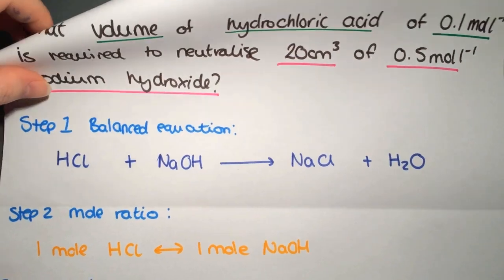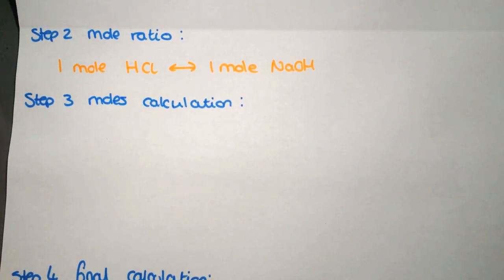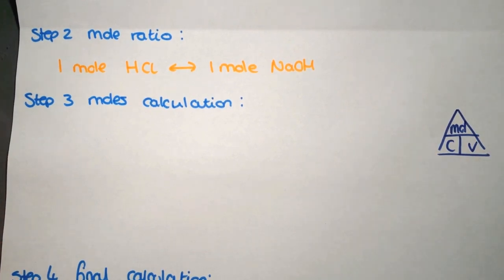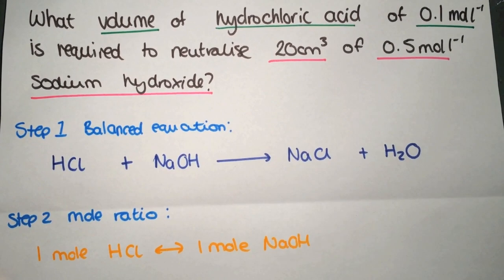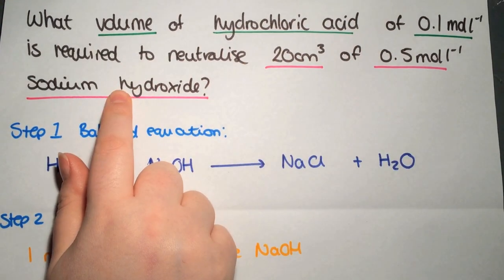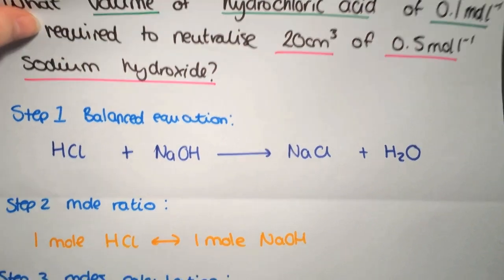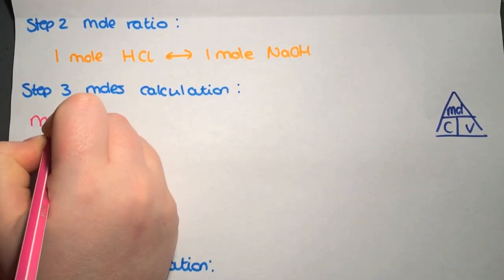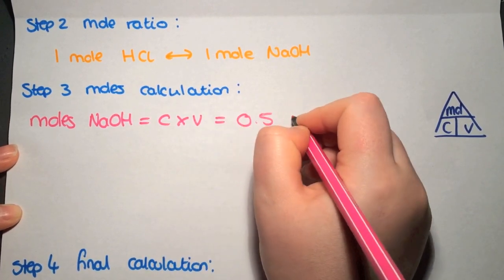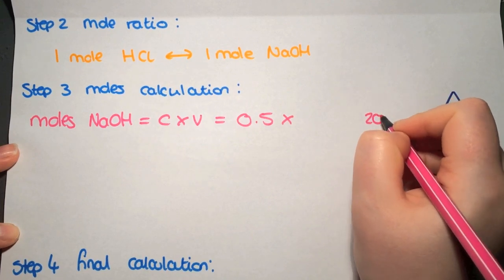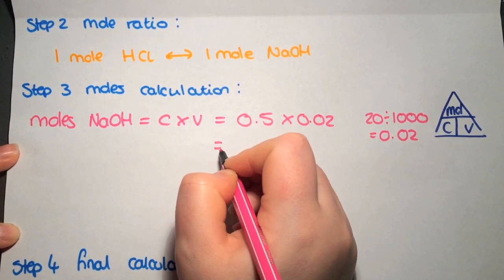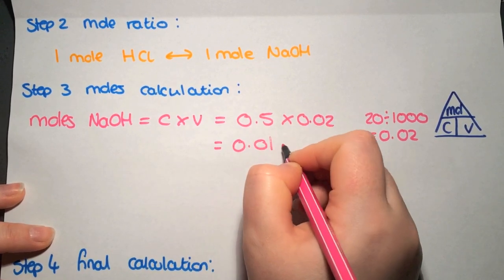To do these calculations, you're going to use the moles equals concentration times volume triangle. You have moles, concentration, and volume. We have a volume and a concentration for sodium hydroxide, which allows us to calculate the number of moles of sodium hydroxide used in the titration. So moles of NaOH equals concentration times volume: 0.5 times 20 cm³, divided by 1000, gives us 0.01 moles.